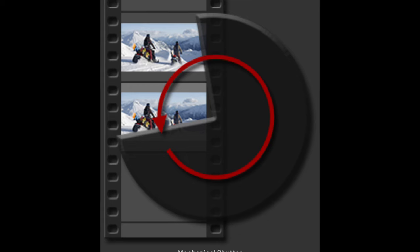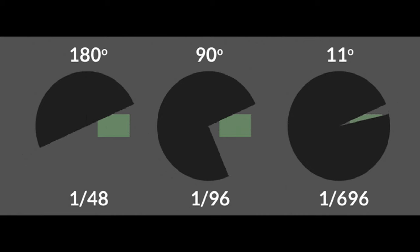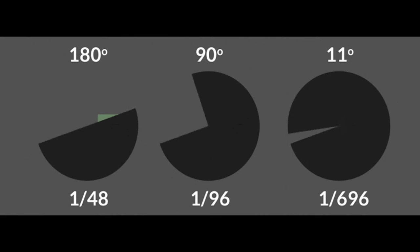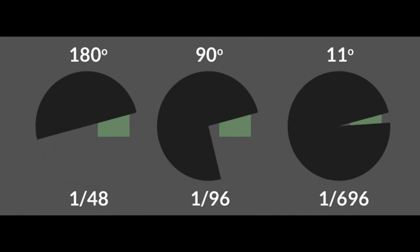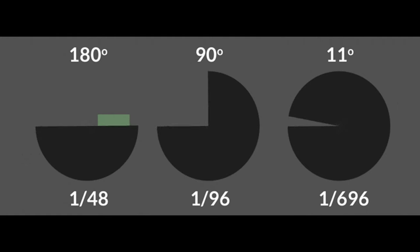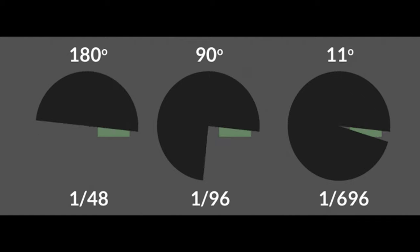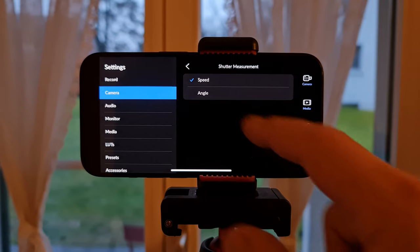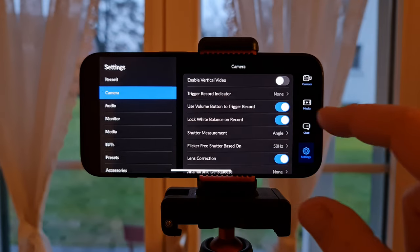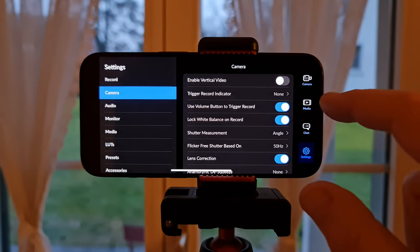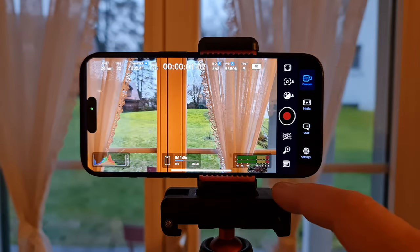Why is it called Angle? Because this comes from movie cameras that use a rotating shutter — cameras that shoot film where the only way to change the shutter speed is to change the angle of the rotating shutter. So we select Angle and then tap Camera to return to the main screen.